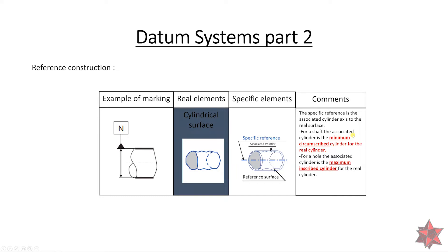For a shaft, the cylinder is the minimum circumscribed cylinder for the real cylinder. We've talked about this in another video on how to measure diameters — go check that out if you want to see more. This is the way you have to do the datums for a cylinder when you have a datum as the axis of the cylinder. For a hole, if you have a hole as a cylinder, you will have to make it as a maximum inscribed cylinder for the real cylinder.